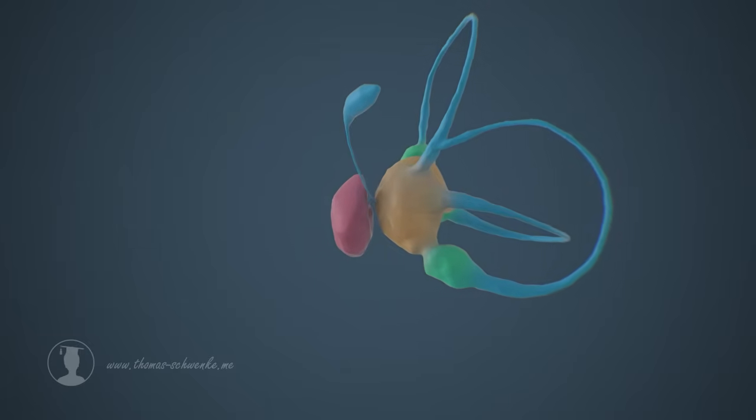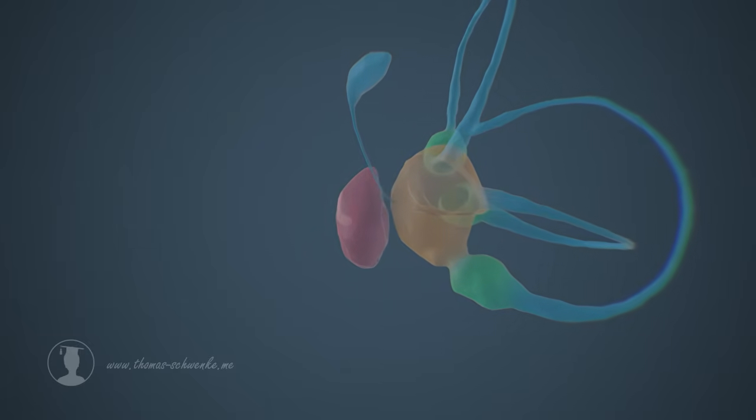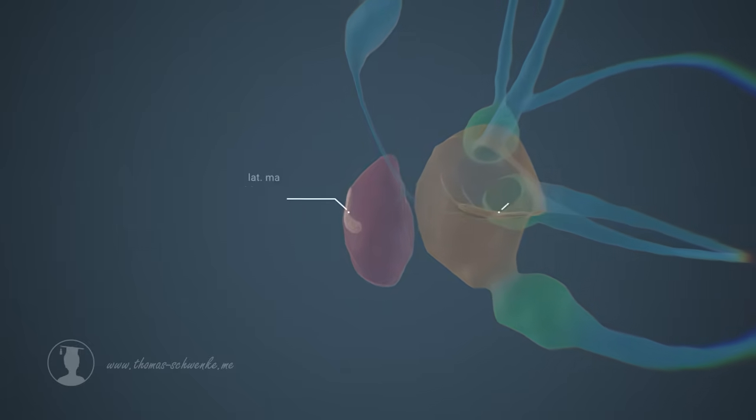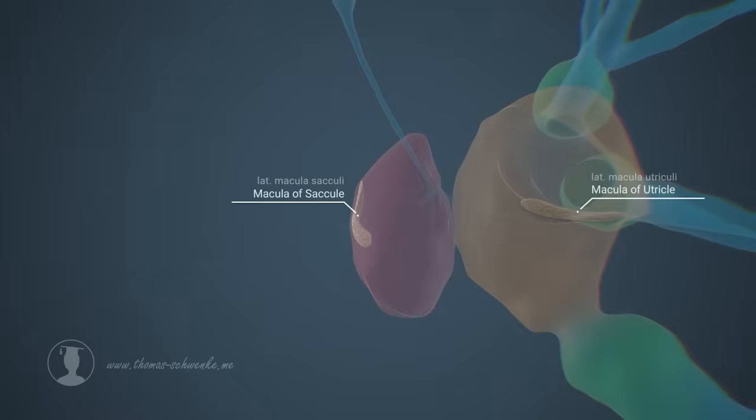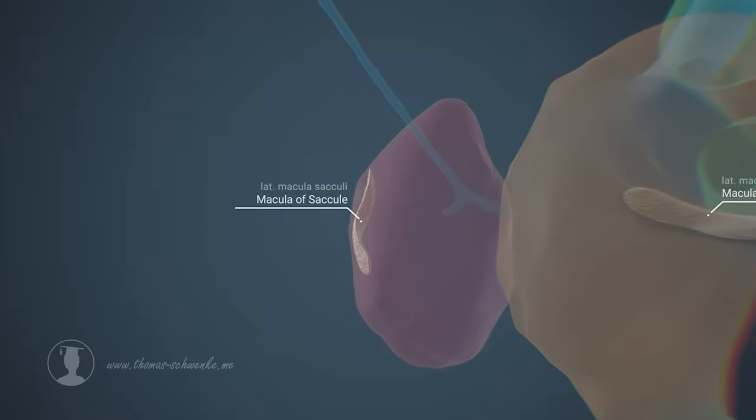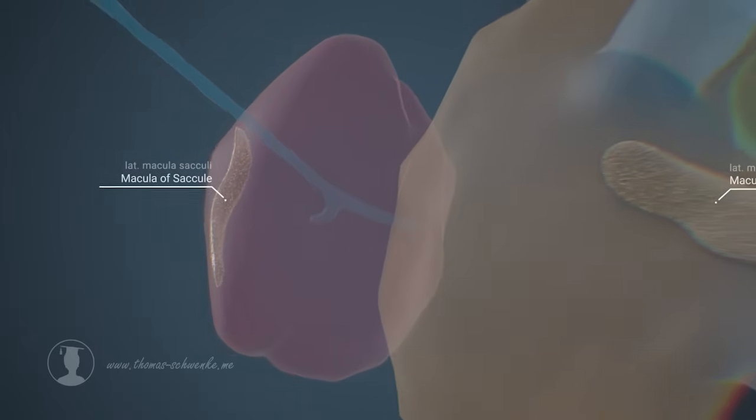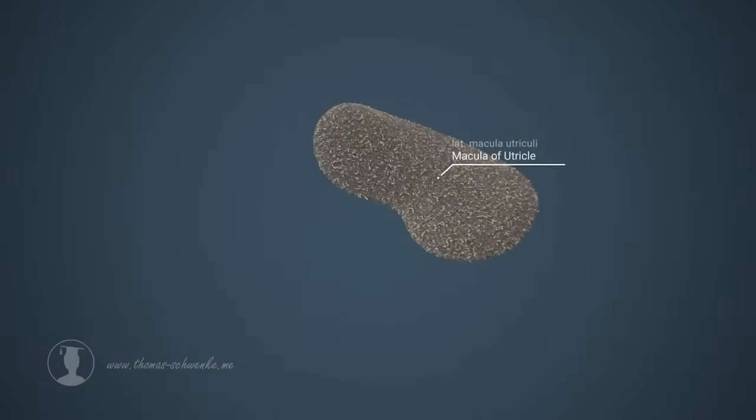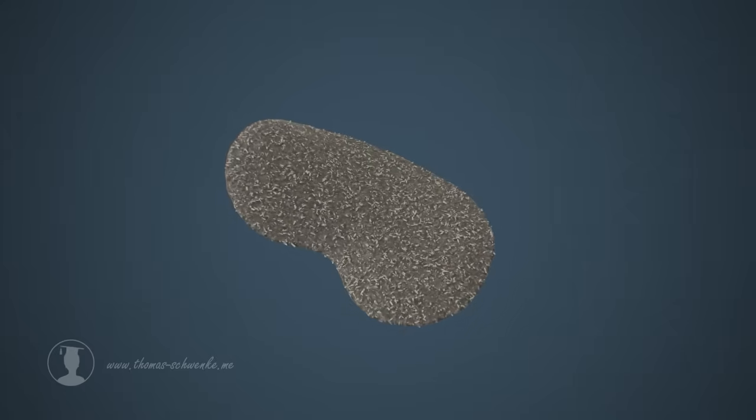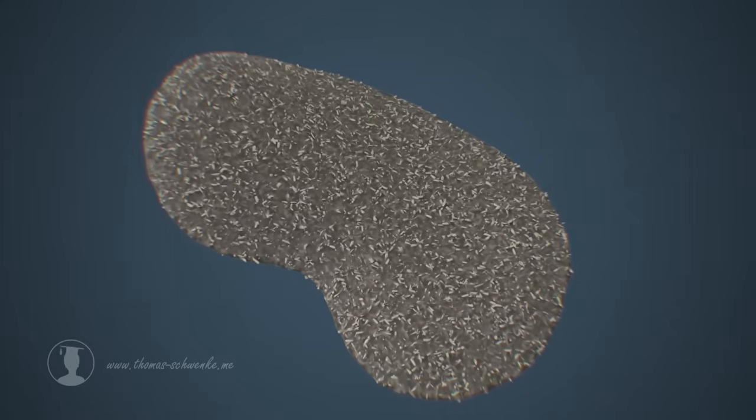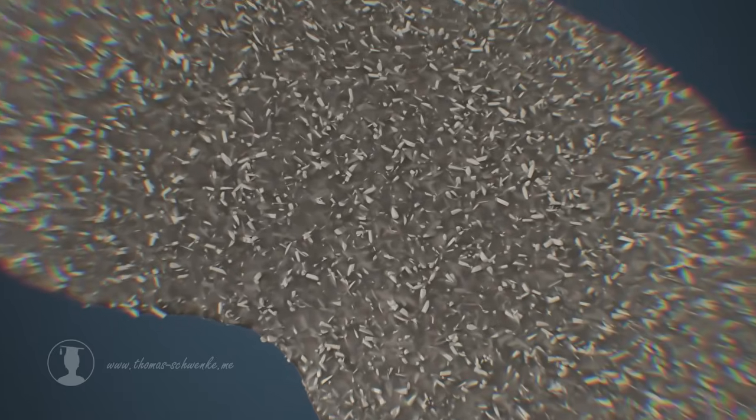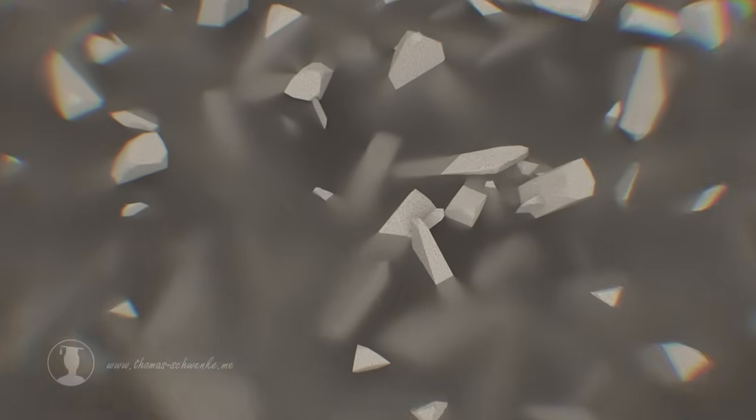Let us first take a closer look at the utricle and saccule. Both saccule and utricle possess a macula. The macula is positioned vertically in the saccule and horizontally in the utricle. The macula consists of a jelly-like substance in which small stones, known as statoliths, are embedded. The relative movement of these small stones is transmitted to the stereocilia of the hair cells, which are located below the statoliths.